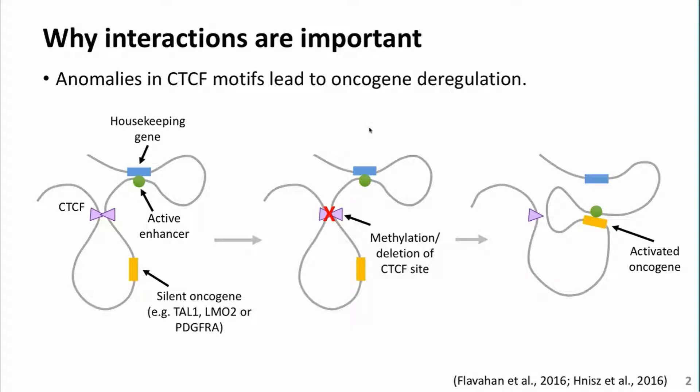Let's dive into the problem. I assume that many people in this audience are already able to understand genome interactions, so I decided to come up with an example. There are two recent papers that showed two silent oncogenes isolated by CTCF sites from an active enhancer. Perturbation of these CTCF sites — which are responsible for holding this loop together — by methylation or deletion was enough to activate these oncogenes and promote cancer development.